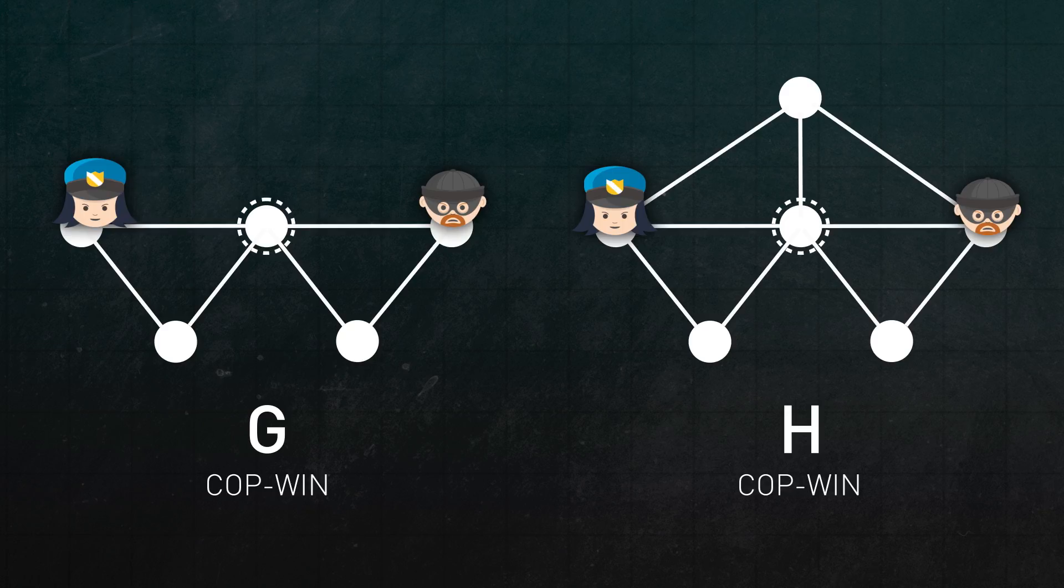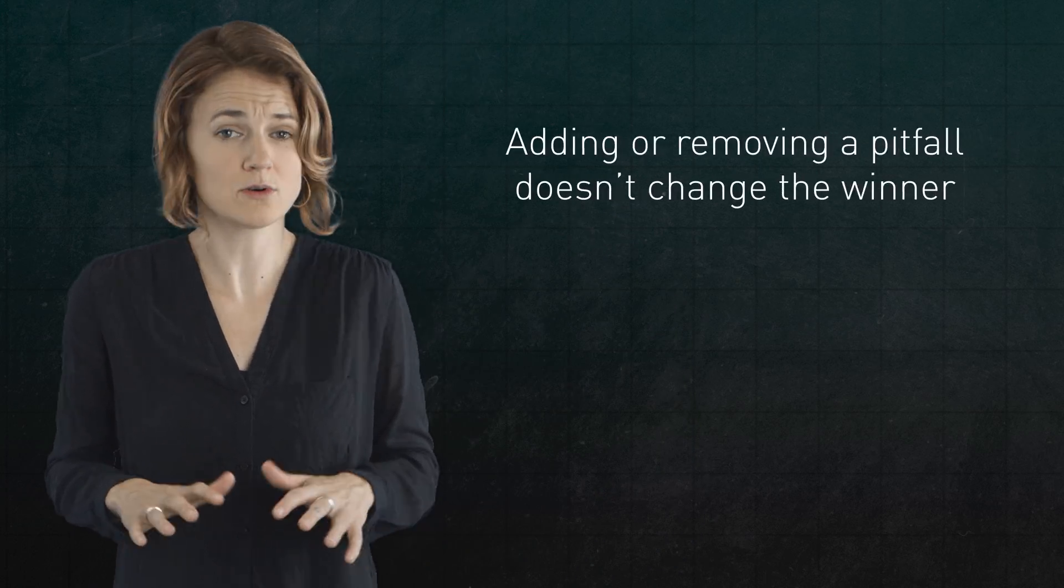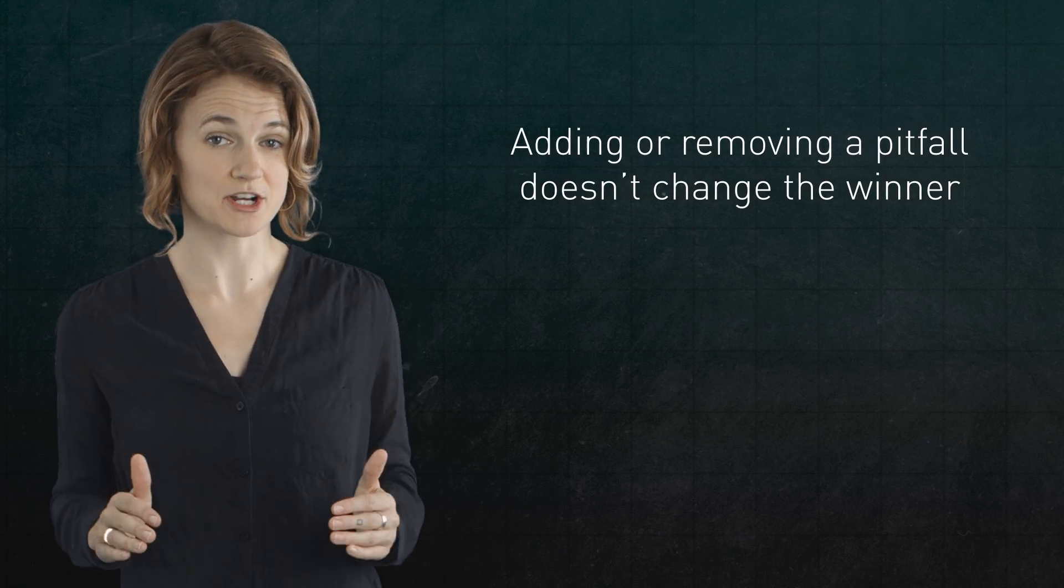A nearly identical argument shows that if G is robber win, so the robber has a winning strategy on G, then we can extend this winning strategy to H, and prove that H is robber win. Therefore, adding or removing a pitfall doesn't change the winner. Now we know that removing a pitfall and its adjacent edges will not change who wins the game.